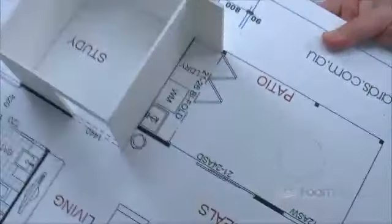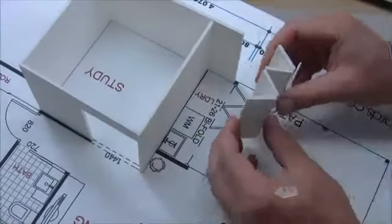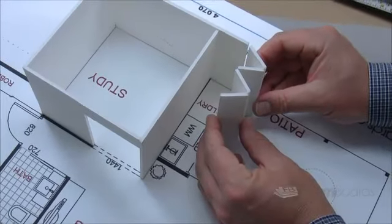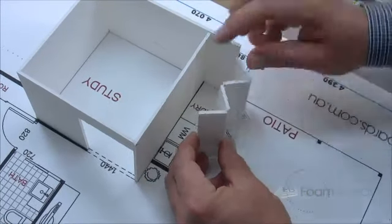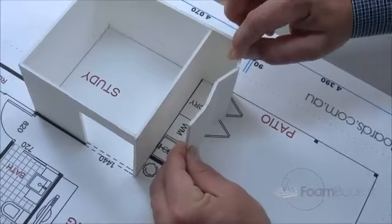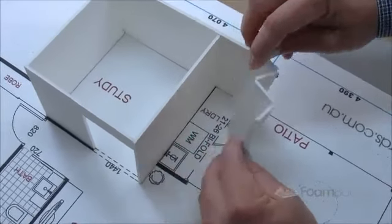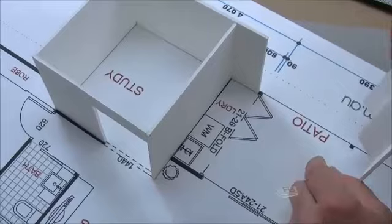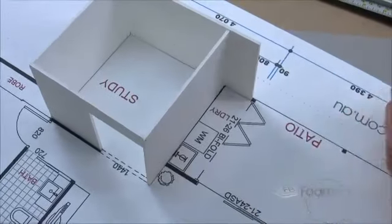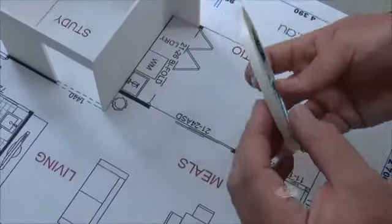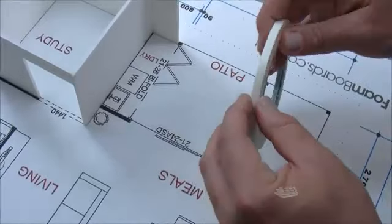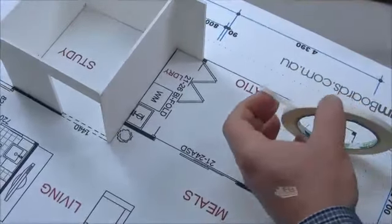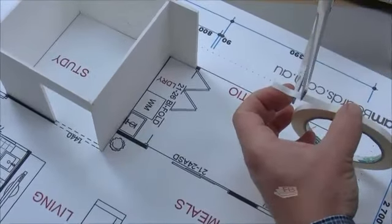Where that's going to go, it's going to sit here as a representation of the bi-fold door for concealing the laundry, which you can see we've got in here. So that's quite easy again. You can use your double-sided tape.